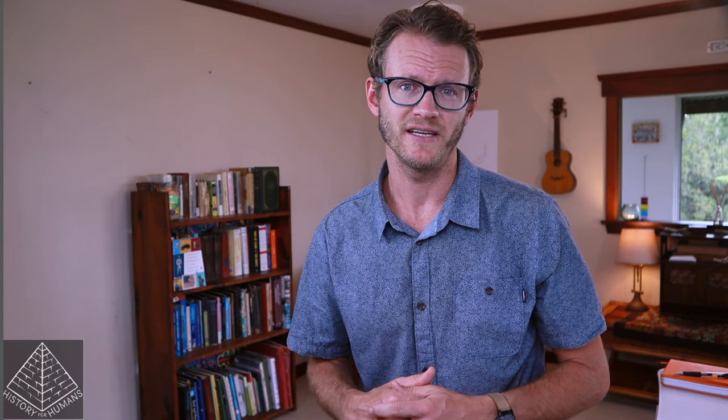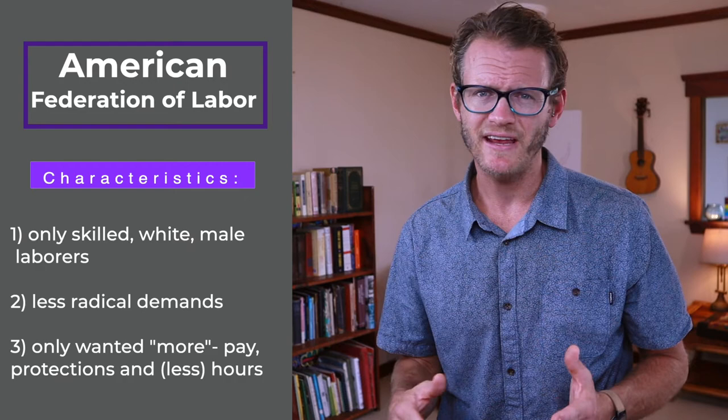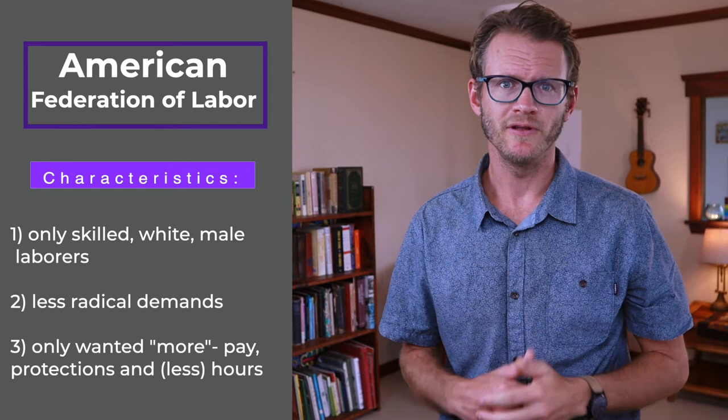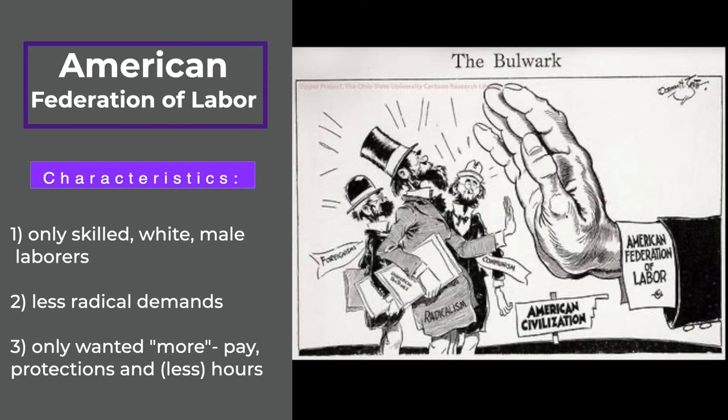Then there was the American Federation of Labor, a union that's still around today. The AFL differed greatly from the Knights of Labor. Led by Samuel Gompers, a Jewish immigrant who worked from a young age with his father making cigars and later led a cigar maker's union, Gompers' AFL embraced American capitalism and did not advocate for radical change. Instead, they simply wanted more — more pay, more benefits, more safety protections, and shorter hours. The AFL only let in skilled workers, but brought together carpenters, masons, hat makers, bricklayers, and cigar makers into one big union with over 500,000 members.